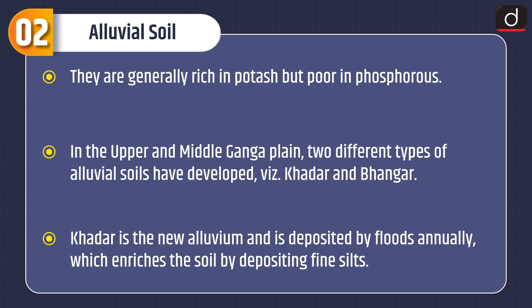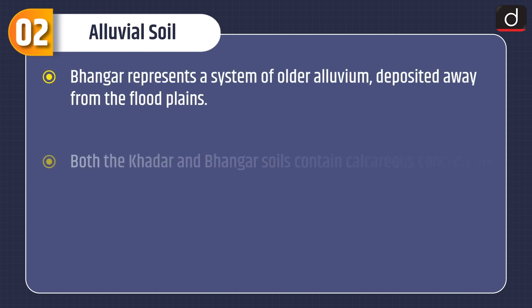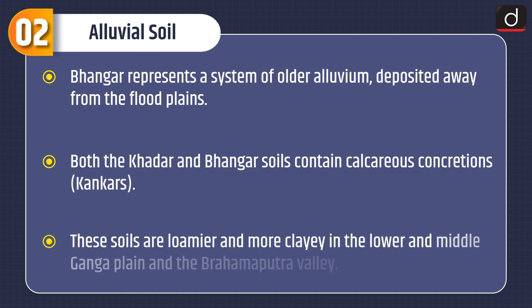Khadar is the new alluvium, deposited by floods annually, which enriches the soil by depositing fine silts. Bhangar represents a system of older alluvium deposited away from the flood plains. Both Khadar and Bhangar soils contain calcareous concretions known as kankars. These soils are loamier and more clayey in the lower and middle Ganga plain and the Brahmaputra valley.